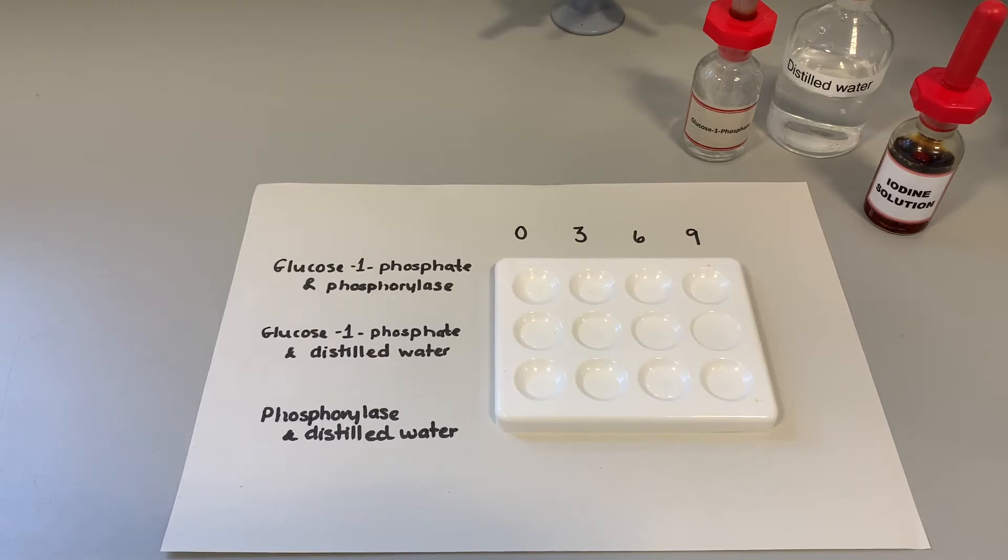We're going to put that in and then at zero minutes, three minutes, six minutes and nine minutes we are going to add iodine solution to see if starch has yet formed. Because remember enzyme controlled reactions do take time to happen.